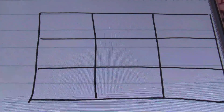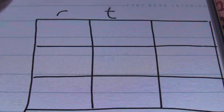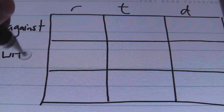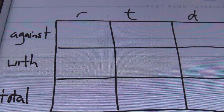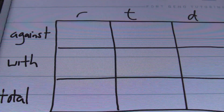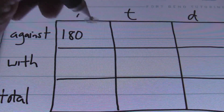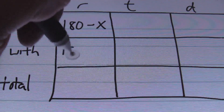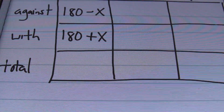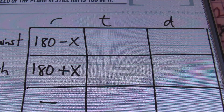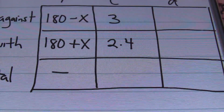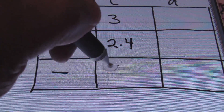Alright, once again we have a distance problem. I'll start by labeling my table with rate, time, and distance. For my rows, I'll be going against the wind and going with the wind, plus a total. The plane's speed in still air is 180 mph. Going against the wind takes away from speed, so that's 180 minus X. Going with the wind adds speed, so that's 180 plus X. The time against the wind was 3 hours; with the wind it was 2.4 hours. Total time would be 5.4 hours, but we won't need that here.